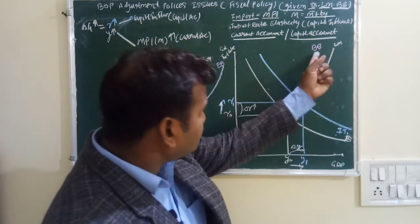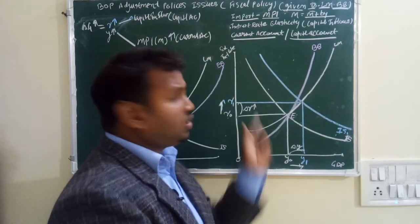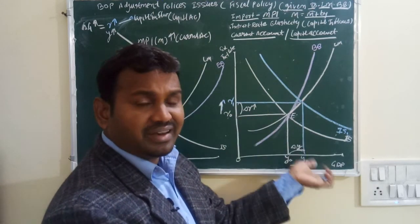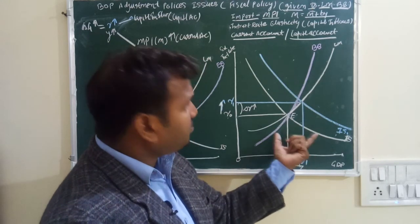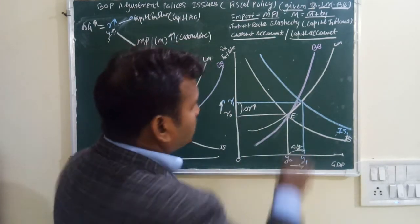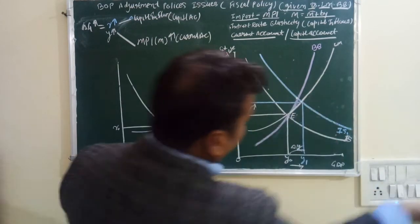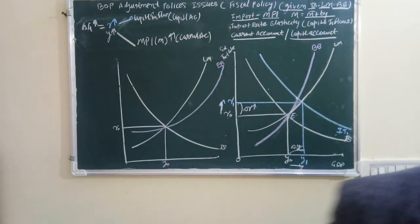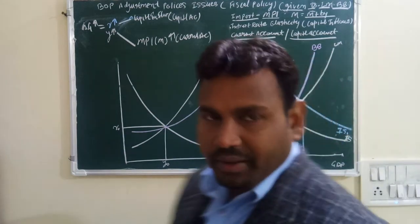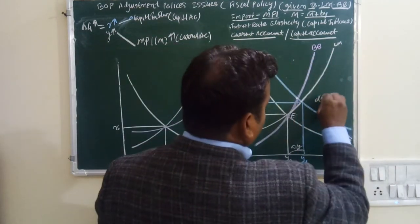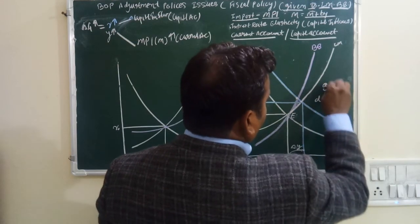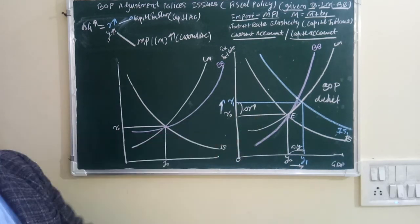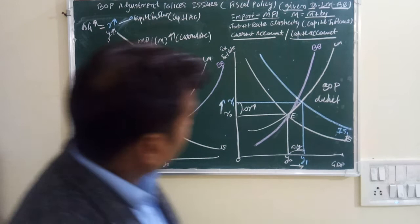In this situation, if the Balance of Payment line is steeper and the new equilibrium point falls to the right of the BOP line, the economy goes into a Balance of Payment deficit.